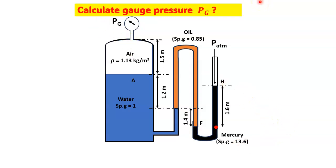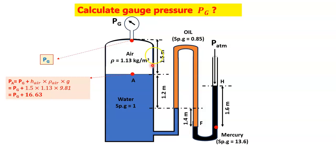We assume the gauge pressure is Pg. The pressure at the air-water interface transmits through the instrument, so the pressure at that point is Pg. Going downward through the air column (height 1.5 m, ρ_air = 1.13 kg/m³), pressure increases: Pa = Pg + ρ_air × g × h = Pg + (1.13 × 9.81 × 1.5) = Pg + 16.63 Pa.